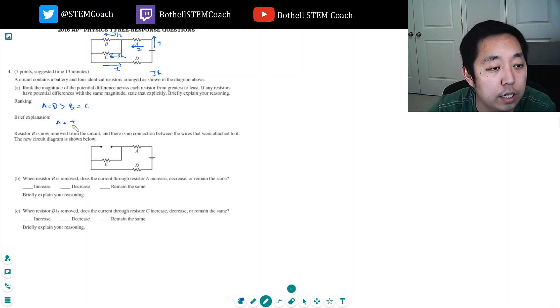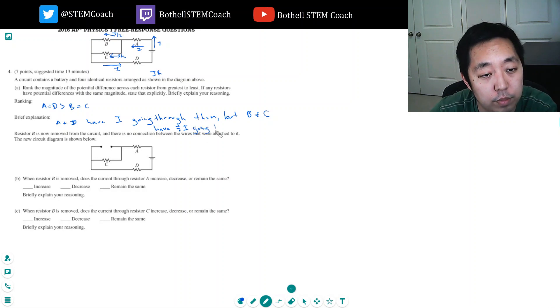A and D have I going through them, but B and C have one half I going through them. And V equals IR.